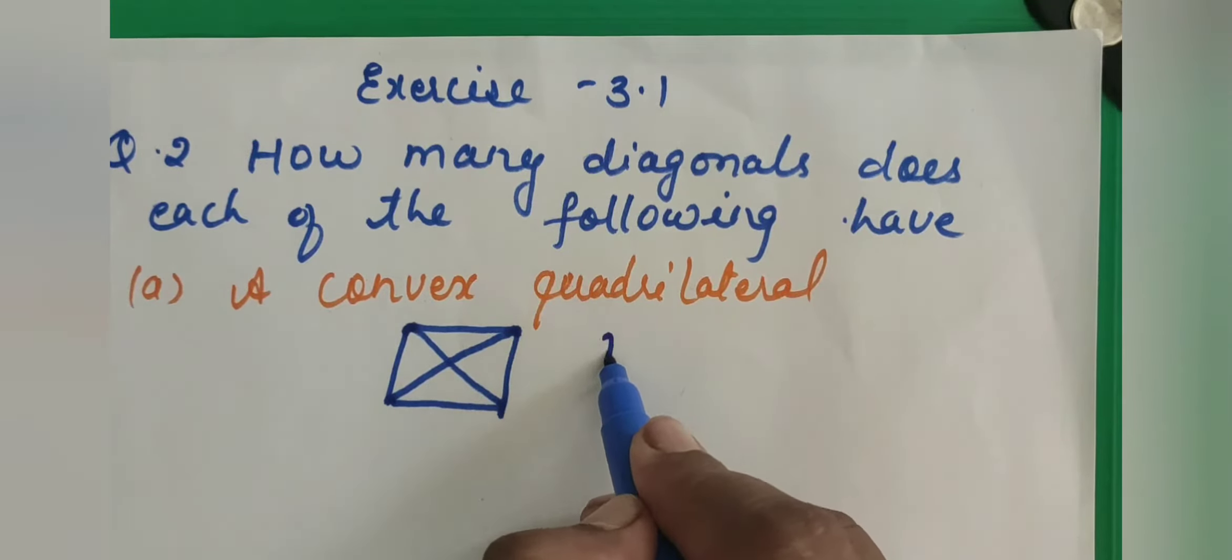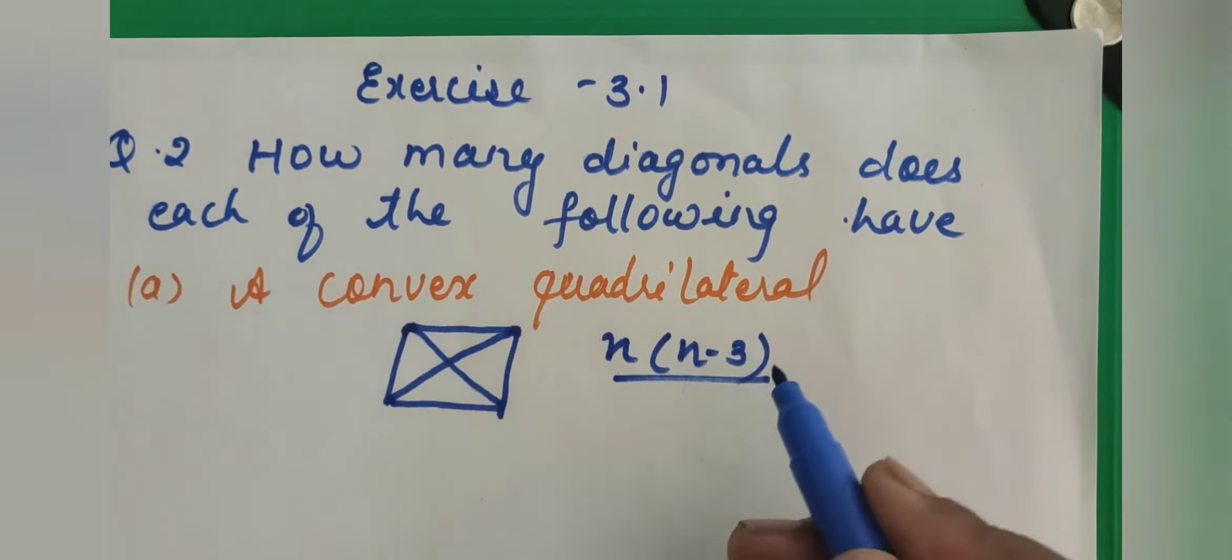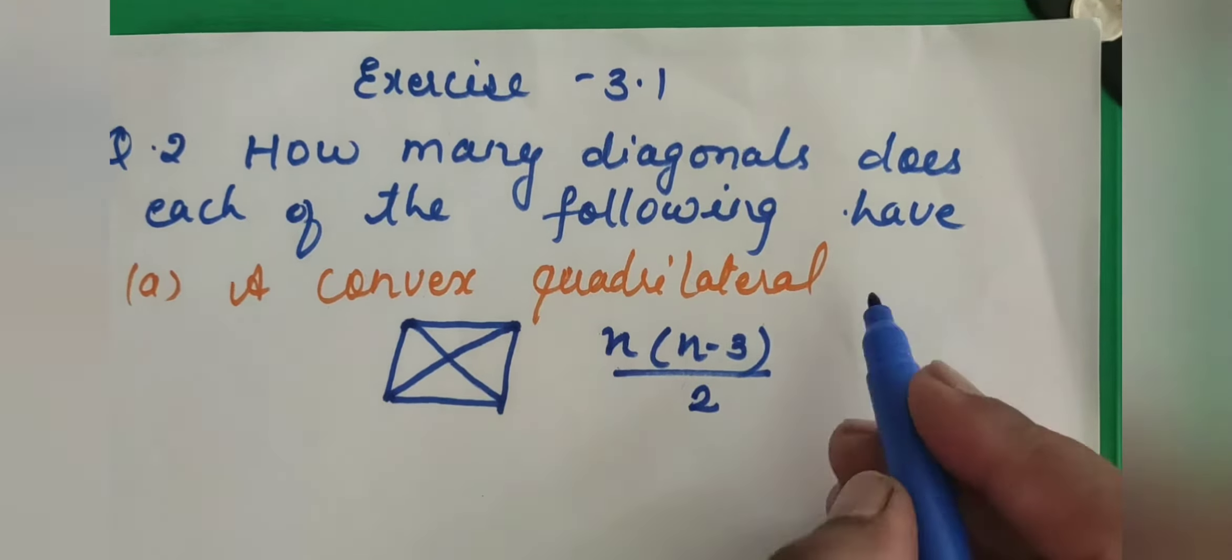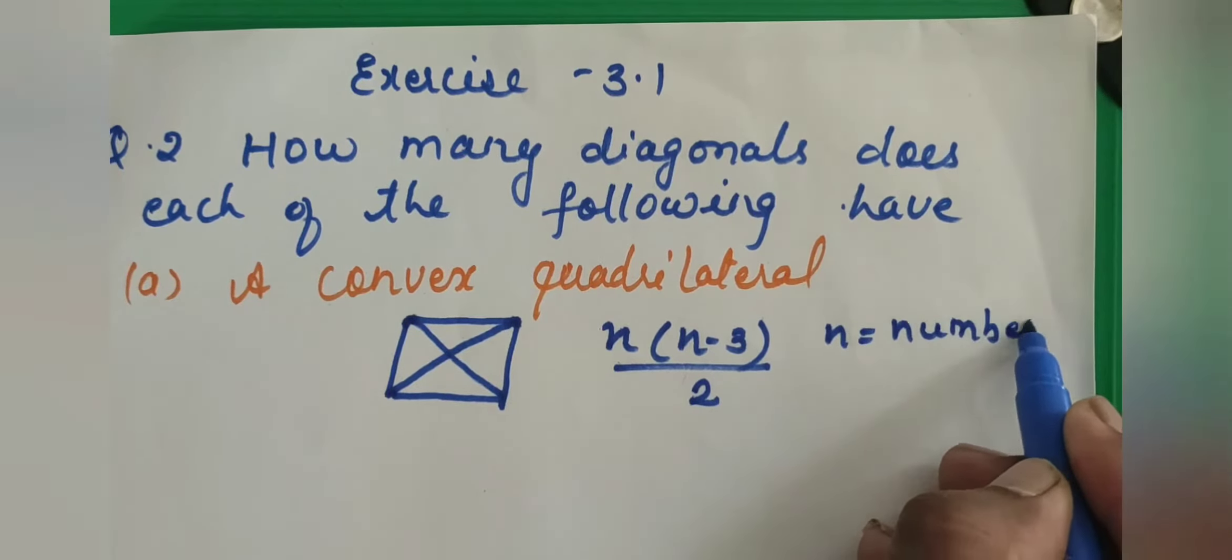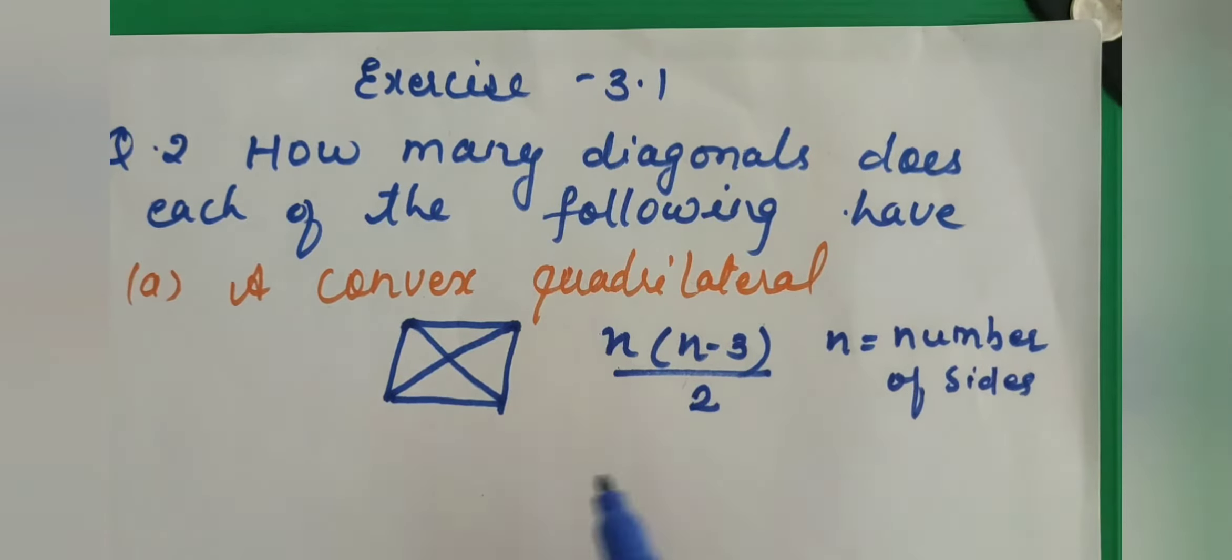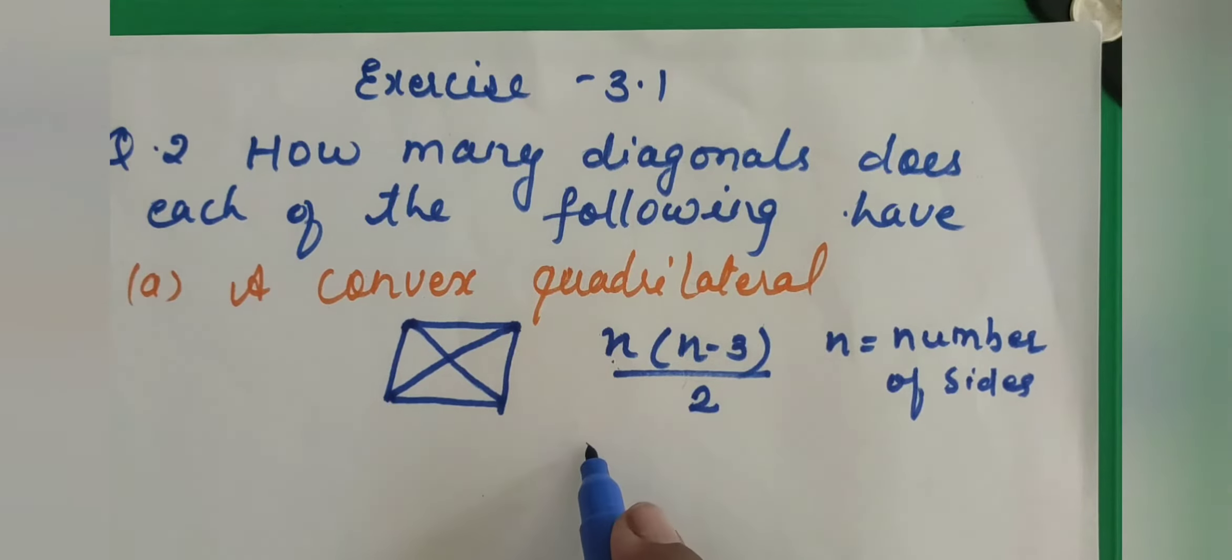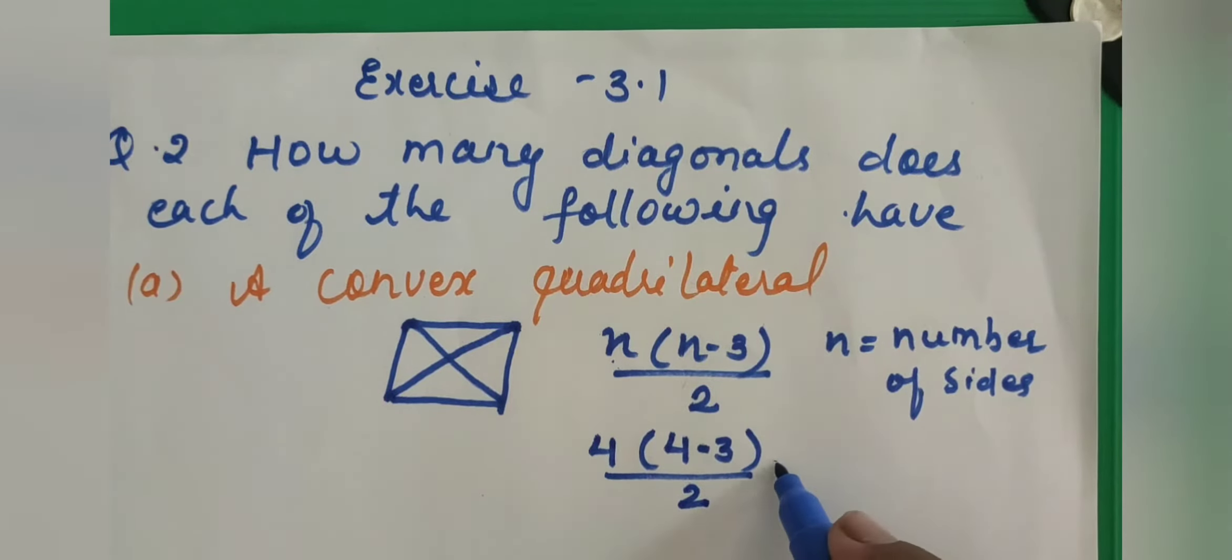The formula is n(n-3)/2. Now you see here, n is what? n is number of sides. Now you put the value in place of n. How many sides are there in a quadrilateral? 4. Now again in place of n, we will put 4 minus 3 upon 2.